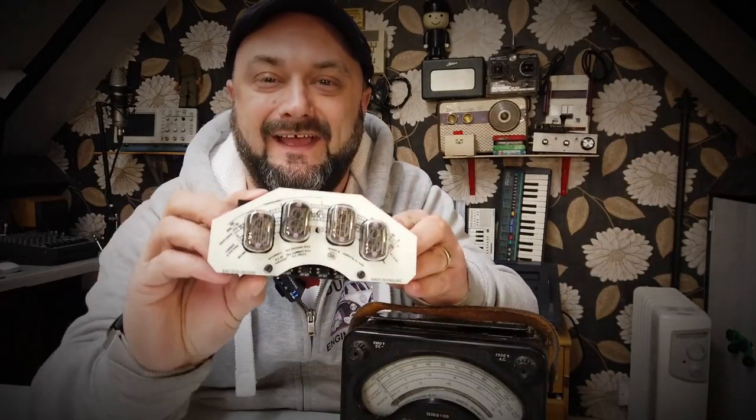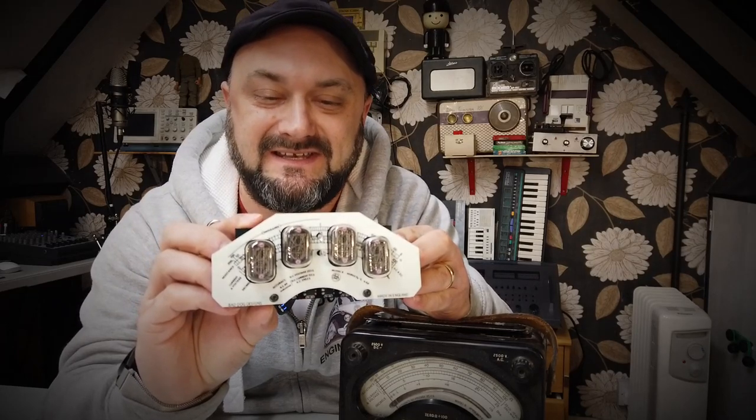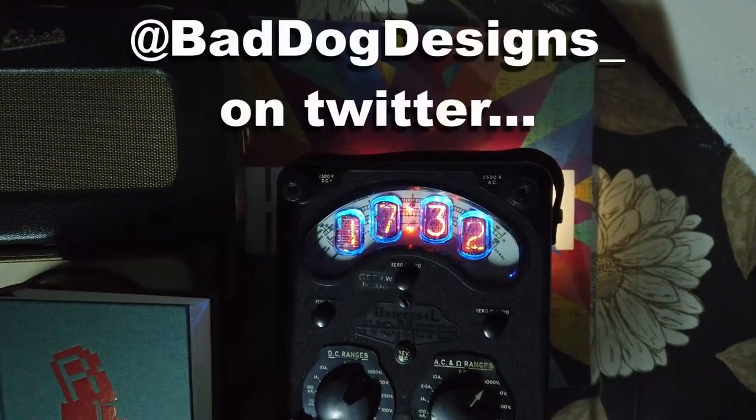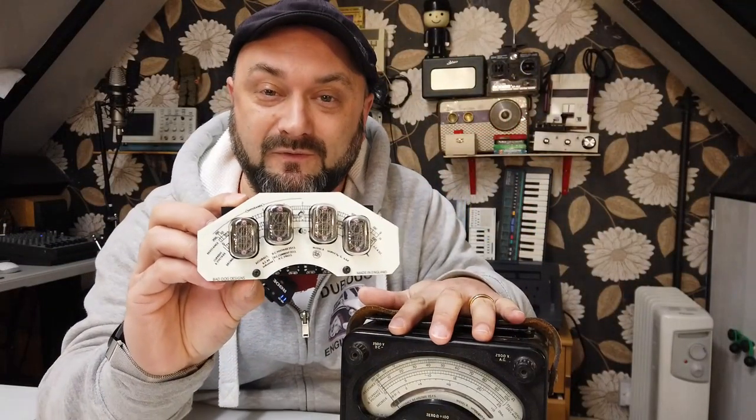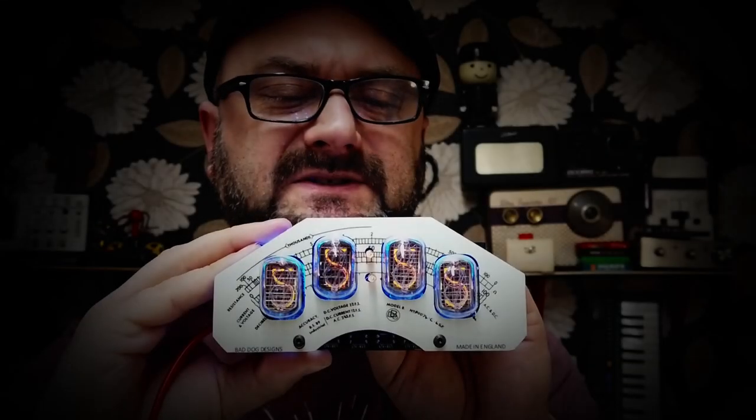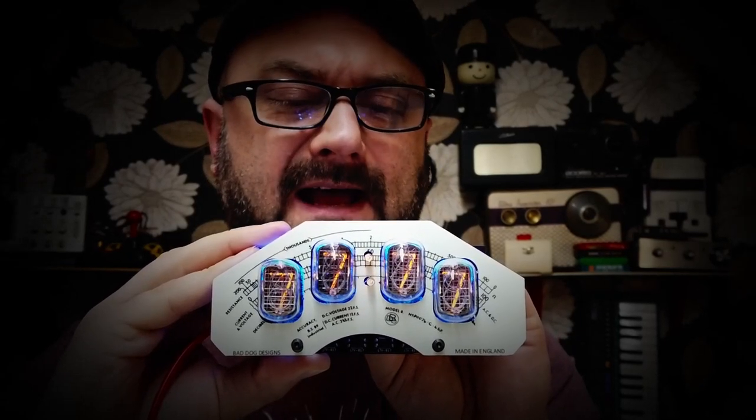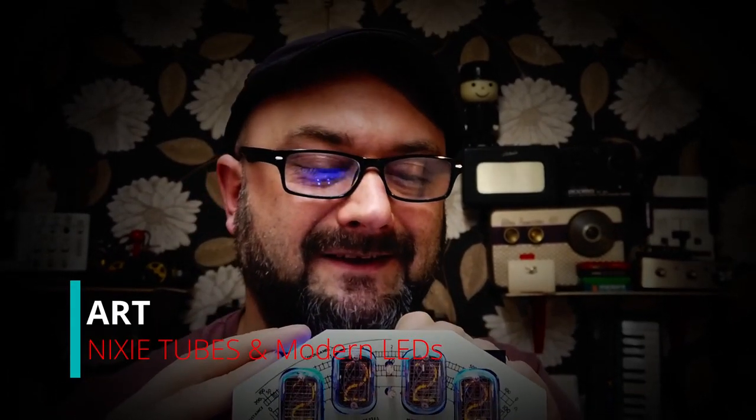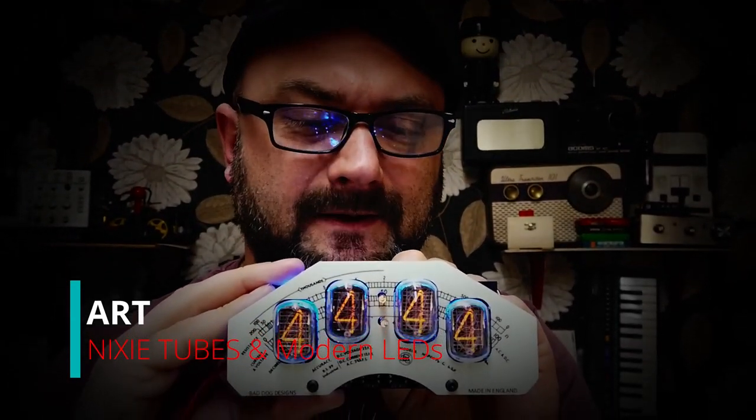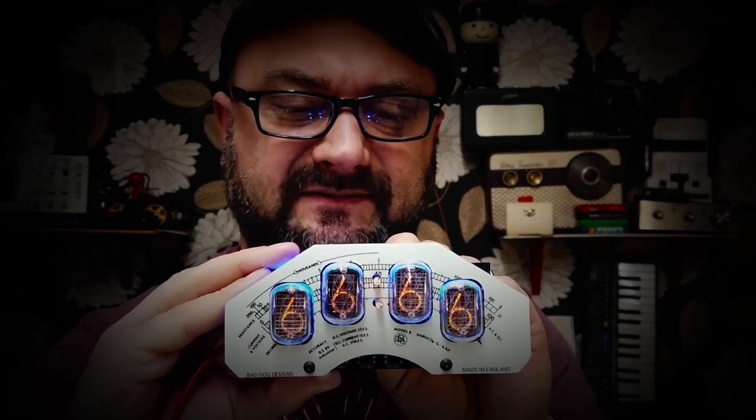This here is a bank of Nixie tubes that's been sent to me by Bad Dog Designs. Let's turn this Evo meter into a beautiful clock. The orange glow of Nixie tubes and amazingly the blue glow of LEDs behind those Nixie tubes, just special, just looks fantastic.